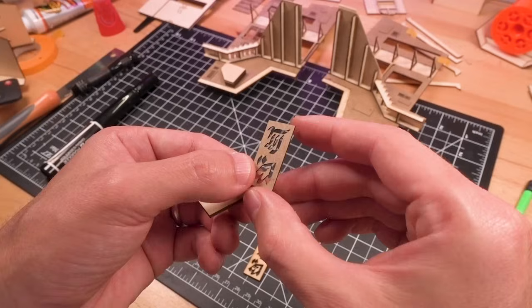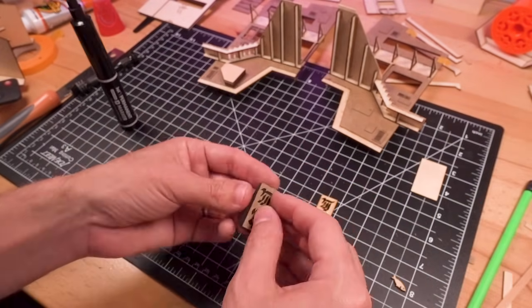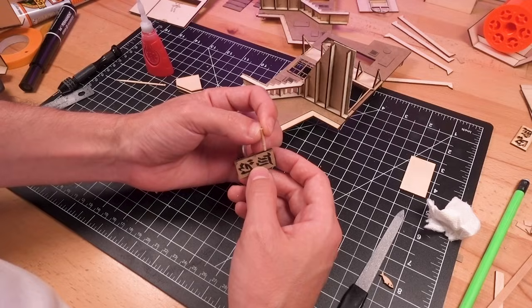It was then onto the sign, which was cut from 1mm chipboard and glued to a small rectangle of basswood, then attached to the building with toothpicks and superglue.